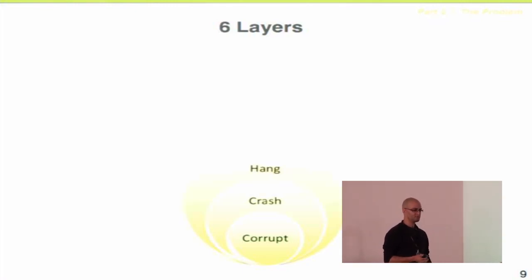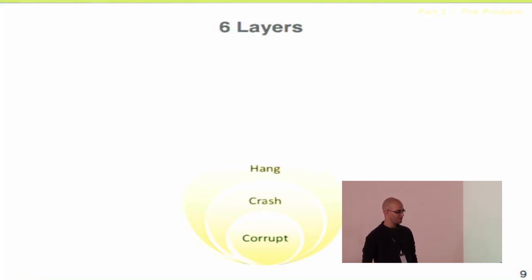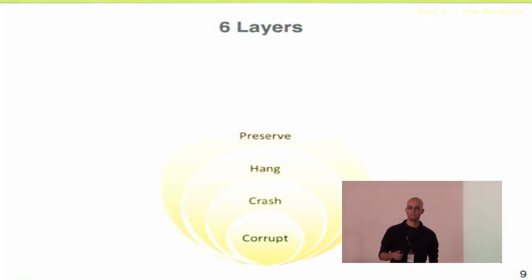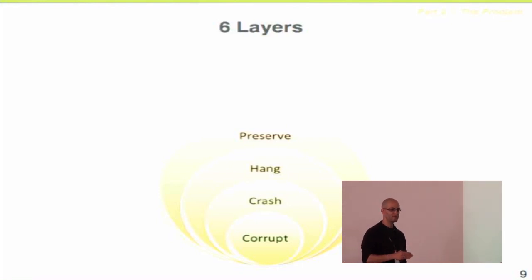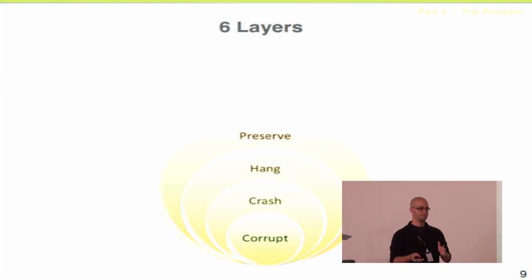The next layer is called Hang — the user tries to open or save a file and LibreOffice just hangs. It could be because of a huge 20,000-row table, or because LibreOffice enters an infinite loop. The next layer is called Preserve, and this means there's some kind of data loss — you open the file, save it back, and you lost the table, or the border color changed from red to black, or the width of a table column changed. We categorize Preserve as either data loss or style loss.